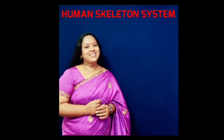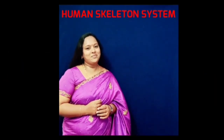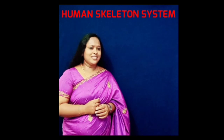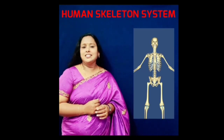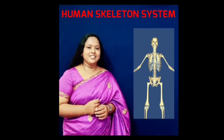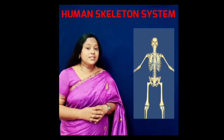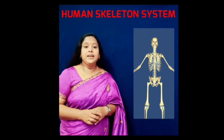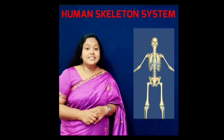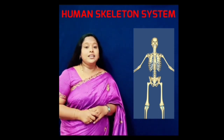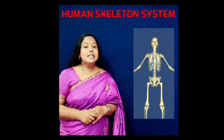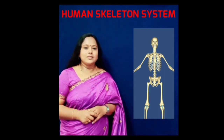Hello everyone, welcome to ASMK Science World. In today's session, we will see something interesting about the human skeletal system. The bones in our body make up a framework called skeleton, and the skeleton of an adult human being is made up of 206 bones.